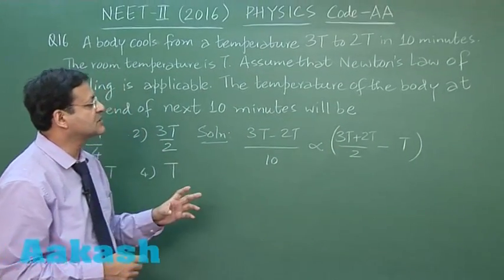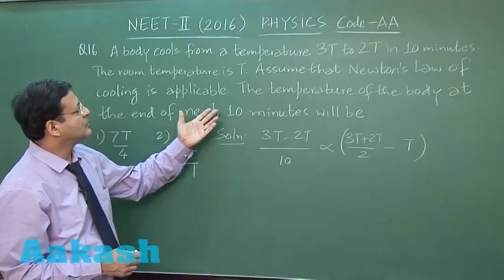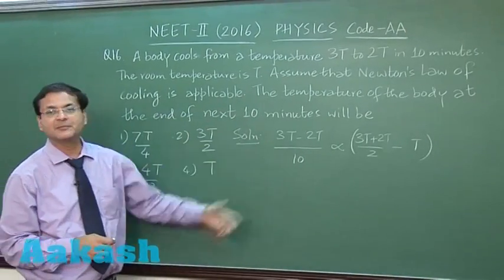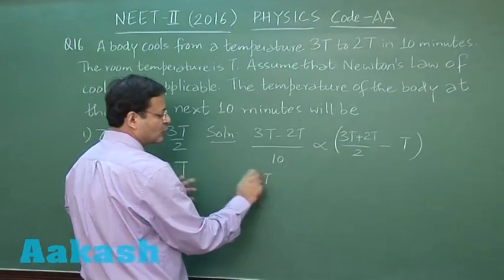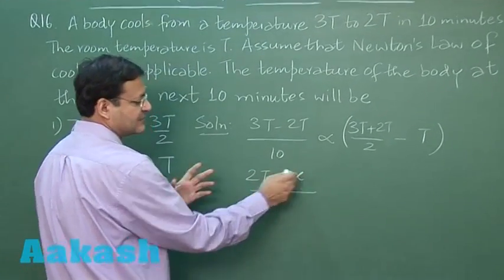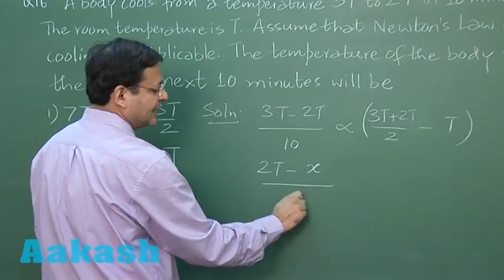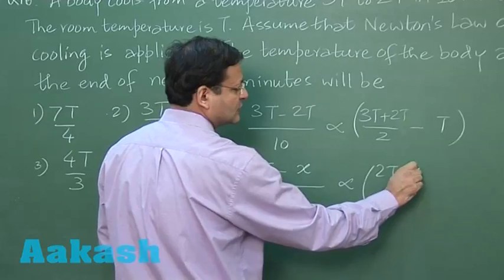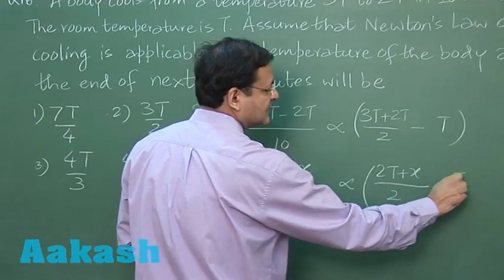Now it is asking the temperature of the body at the end of next 10 minutes. So let us suppose it switches over from 2T to x. The value of x you are supposed to calculate. In 10 minutes so this will be 2T plus x by 2, this is the average temperature, minus the temperature of surroundings.